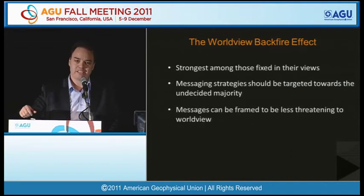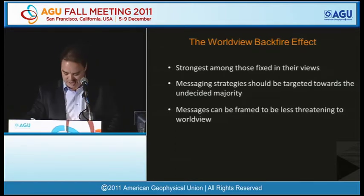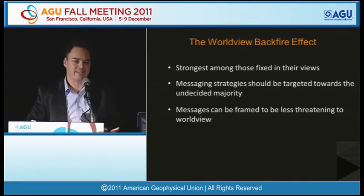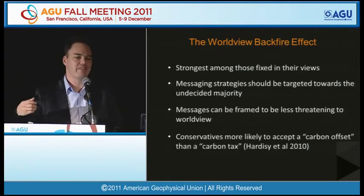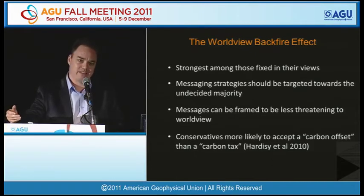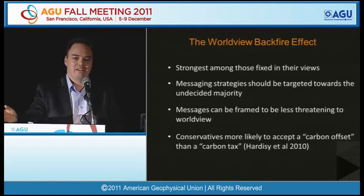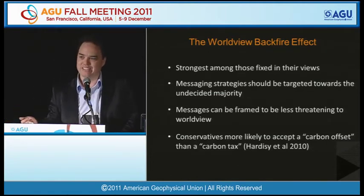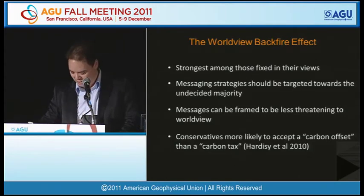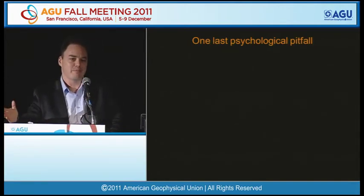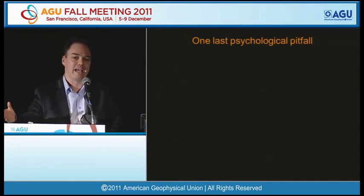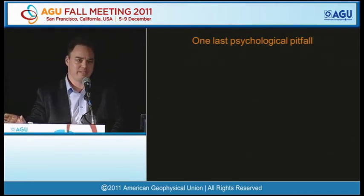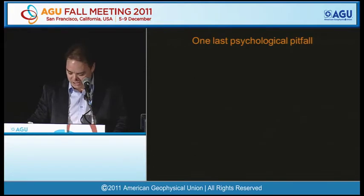Another way information can be made more acceptable is by framing it in a way that's less threatening to people's worldviews. For example, research found that conservatives were more likely to accept climate action if it was framed as a carbon offset rather than a carbon tax. Interestingly, the choice of wording had little effect on Democrats or independents because their values are not challenged by the word 'tax.' That's a basic summary of the different backfire effects that communicators need to be aware of — now let's say you manage to avoid all those booby traps. There's one last psychological pitfall to look out for.